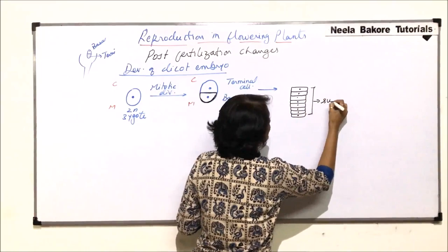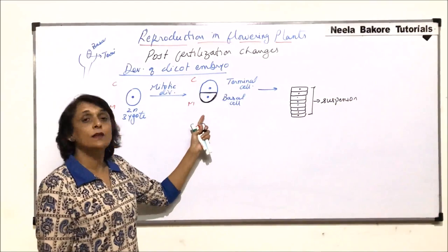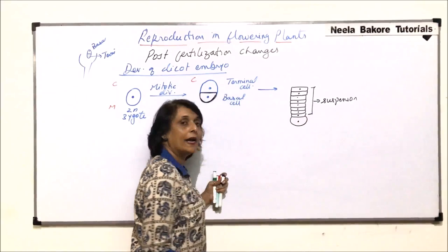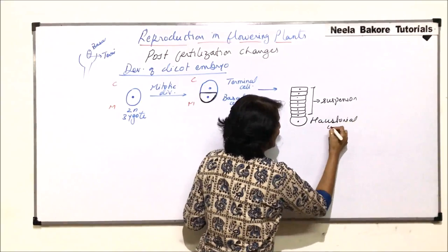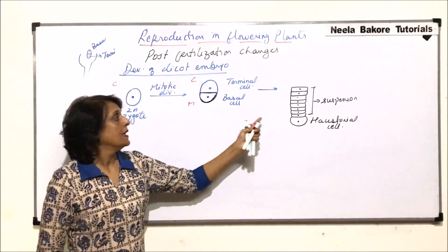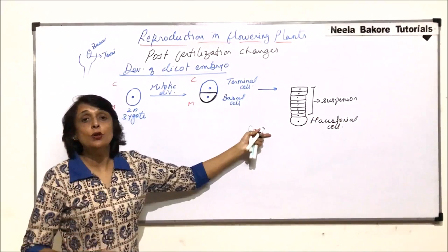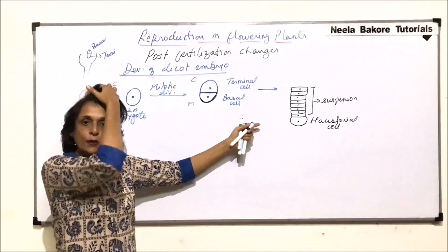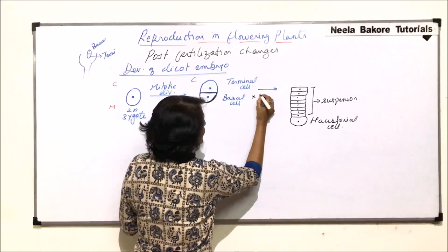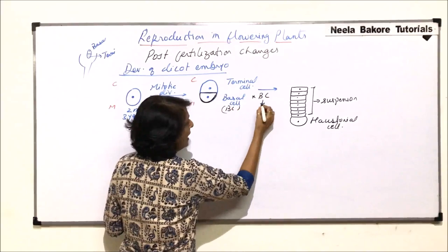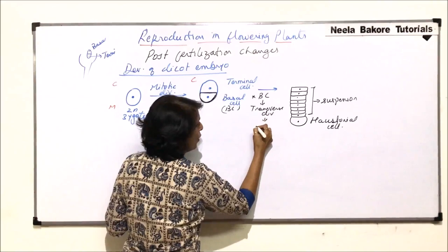This long structure is known as the suspensor. The cell of the suspensor which is towards the micropyle is slightly bigger, rounded, and is known as the haustorial cell. The function of the suspensor is to push the embryo deep into the endosperm. To summarize: the basal cell undergoes transverse divisions to form the suspensor.